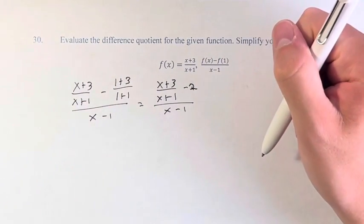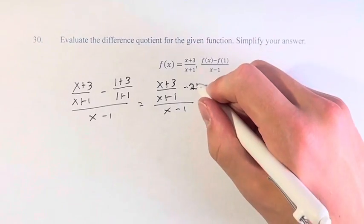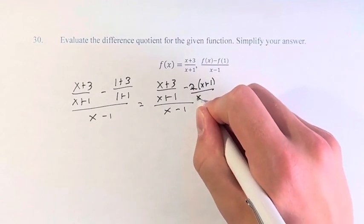We want to combine this into one fraction on top, so what we're going to do is multiply this by x plus 1 over x plus 1.